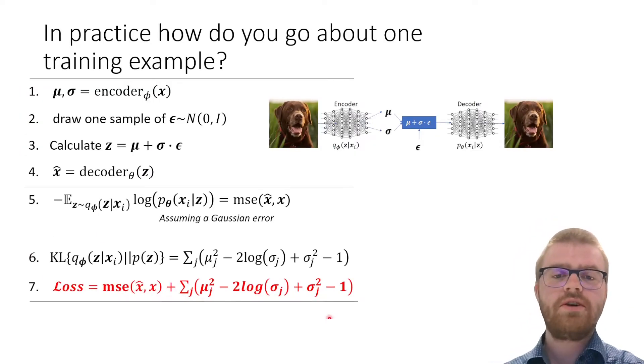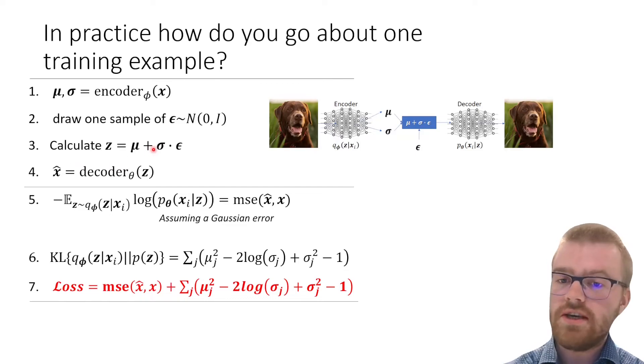In practice, how do we go about one training example? We do it as follows. First we encode—we have x and we push it through the encoder with parameters φ and we get out μ and σ. Then we draw a sample of ε and we will calculate what z is. Then we push this z through the decoder to get x hat.